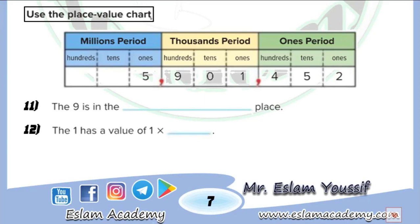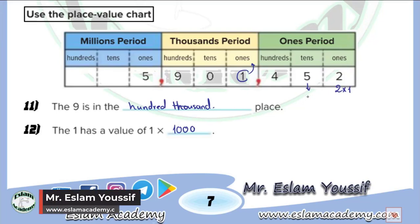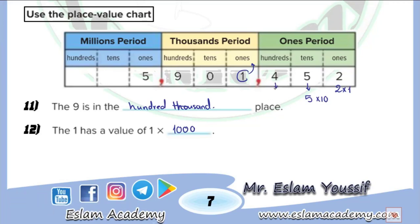In this part of the lesson we use the place value chart to solve the questions. For question 11, we need to find the place value of 9, which lies at the hundred thousands place. The digit 1 lies at the thousands place, so its value is 1 times 1,000. The value of 2 is 2 times 1. The value of 5 is 5 times 10, since there is 1 digit to its right. The value of 4 is 4 times 100, since there are 2 digits to its right. The value of 1 is 1 times 1,000 with 3 digits to the right. The value of 0 at any place equals 0.